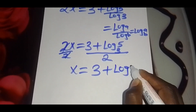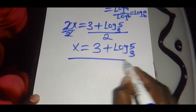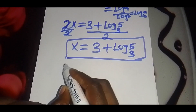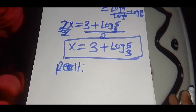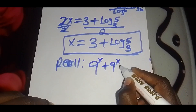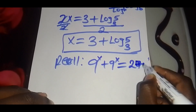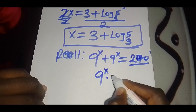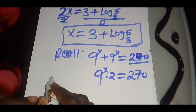To solve for x, we divide by 2, so that x equals (3 plus log 5 to base 3) divided by 2. Now let's check if this value of x satisfies the equation. Recall we had 9^x plus 9^x equals 270, which is 9^x multiplied by 2 equals 270.